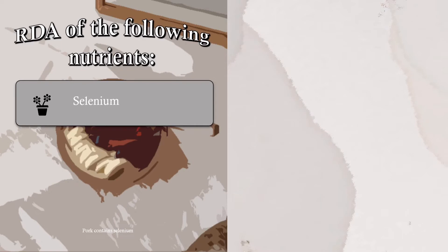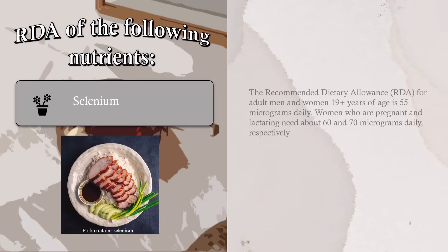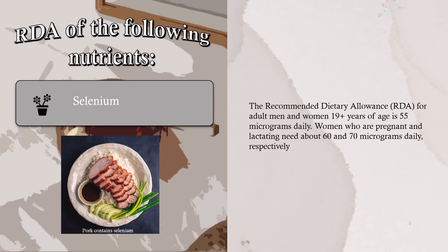Selenium: Pork contains selenium. The RDA for adult men and women 19 plus years of age is 55 micrograms daily. Women who are pregnant and lactating need about 60 and 70 micrograms daily, respectively.